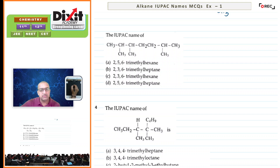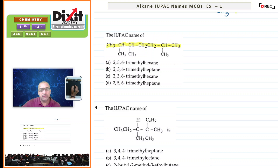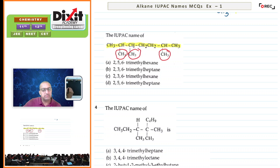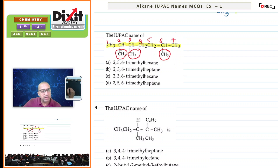Next question: IUPAC name for the given compound. Consider the longest continuous carbon chain and identify the substituents present — three methyl groups are present. The chain is numbered from the end which is nearer to the side chain or more branching. So the correct name will be 2,3,6-trimethylheptane — seven carbon atoms, so heptane. The option is B.